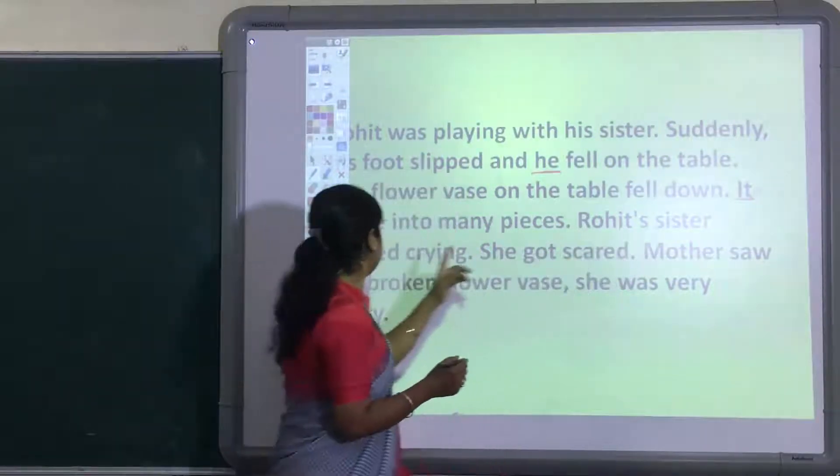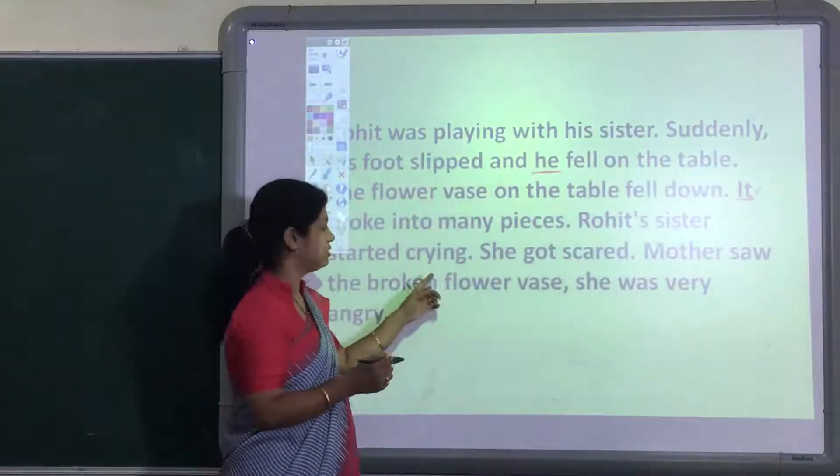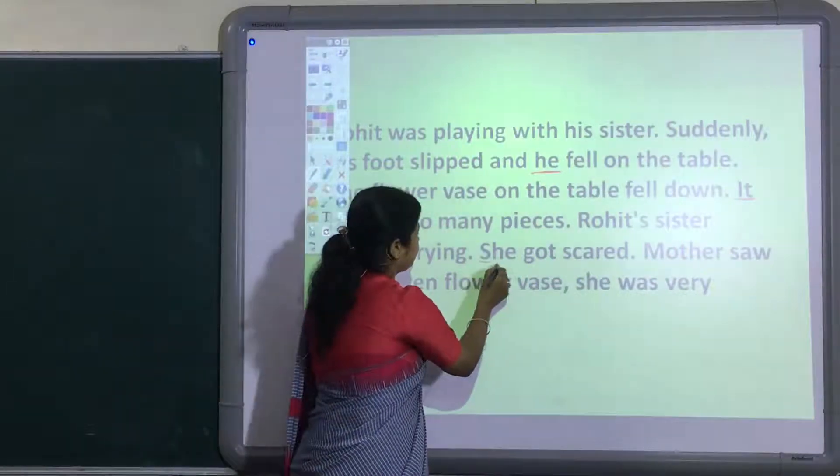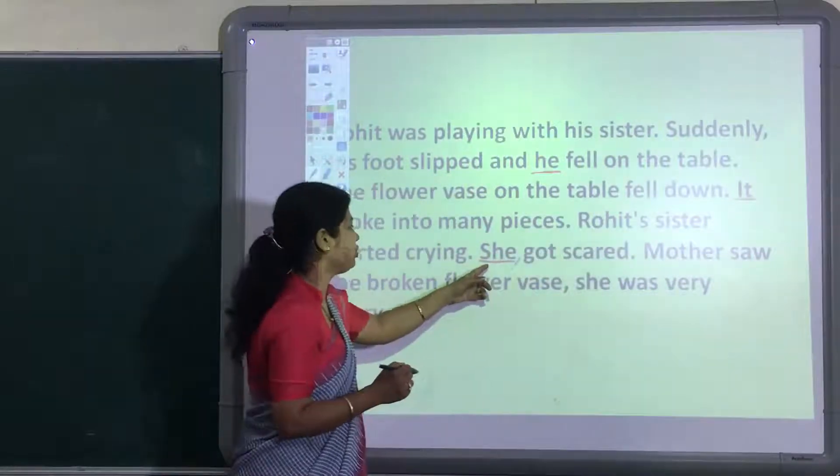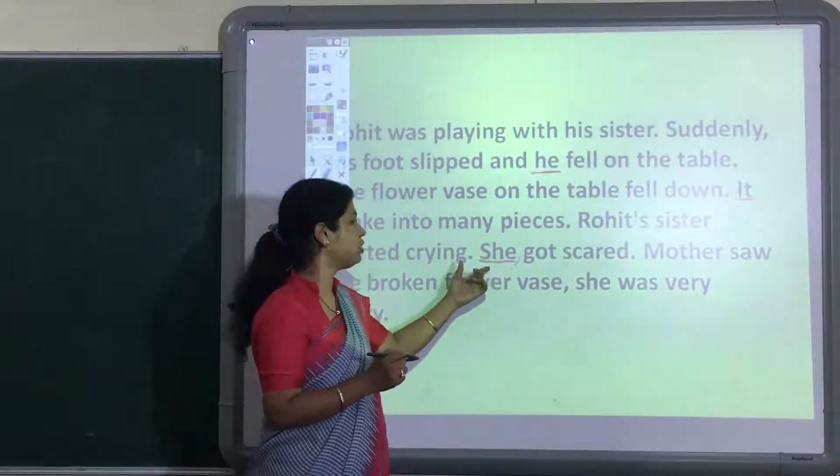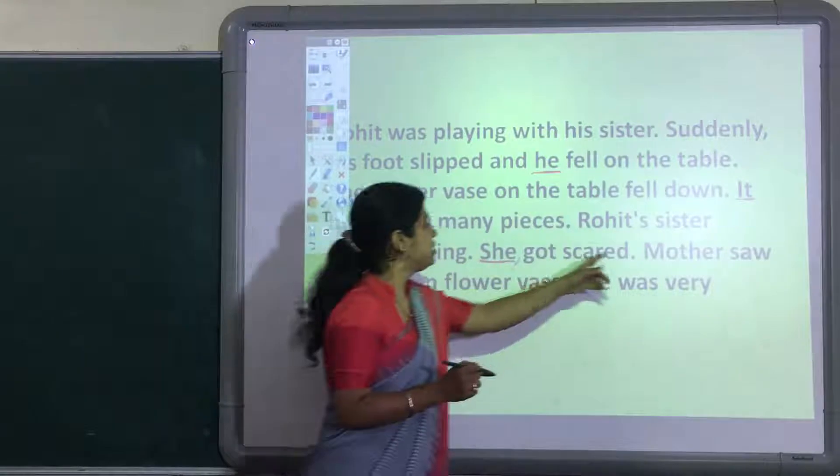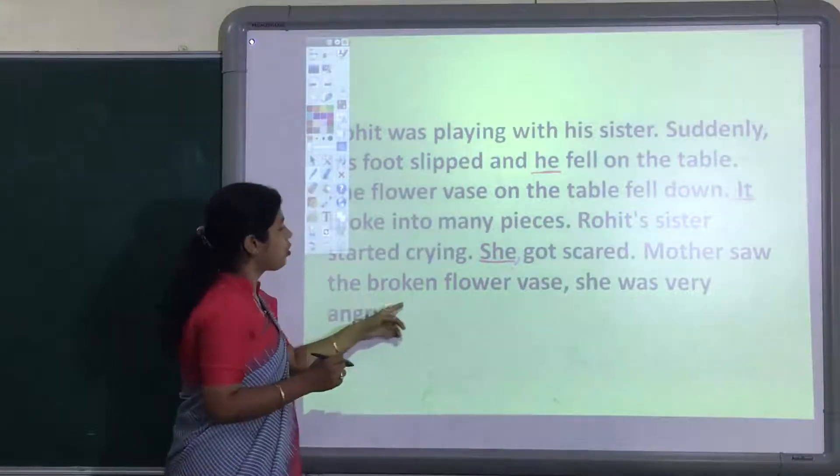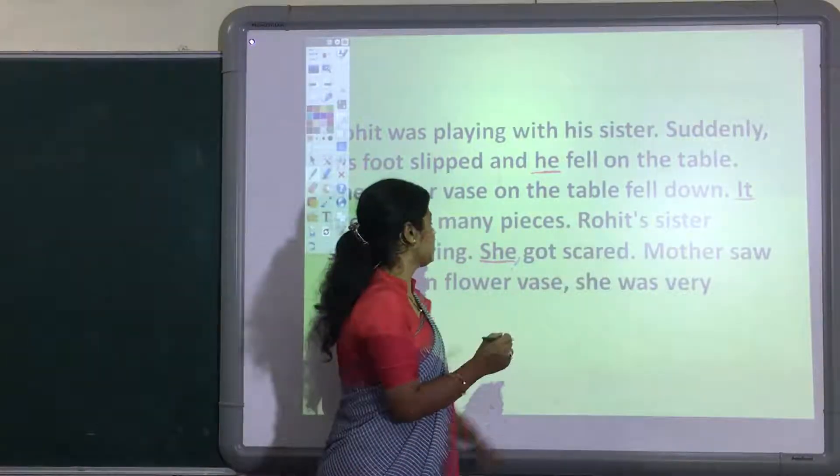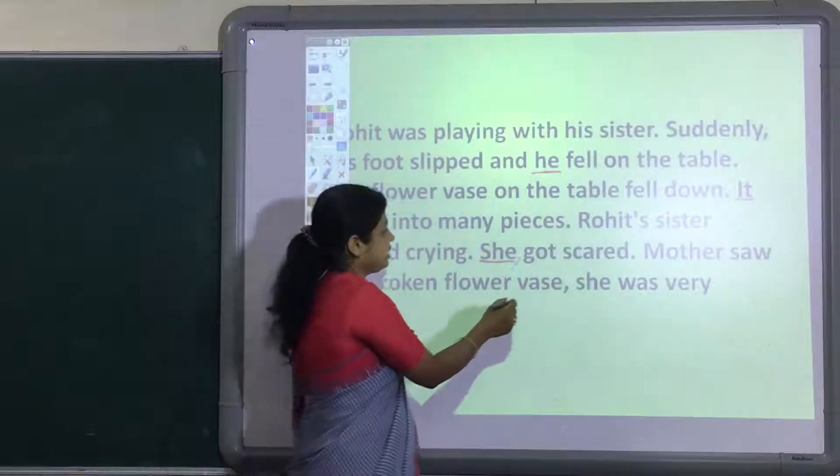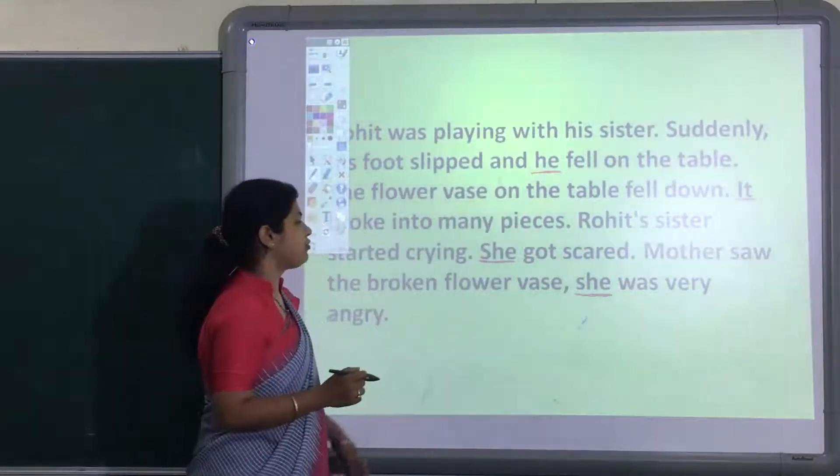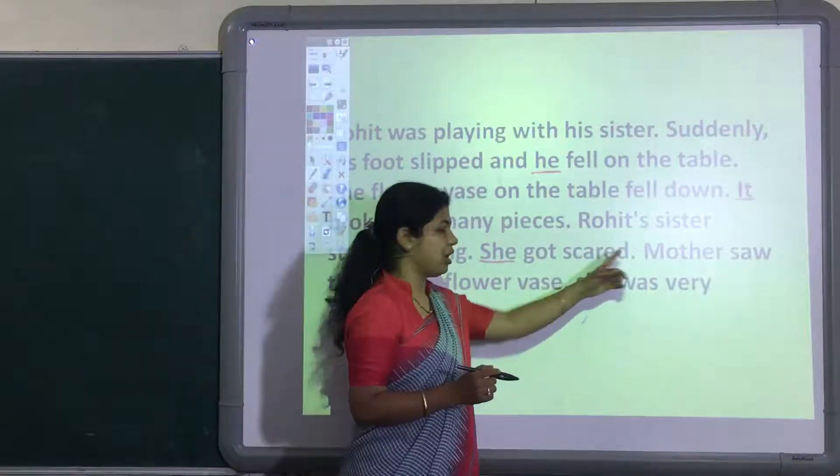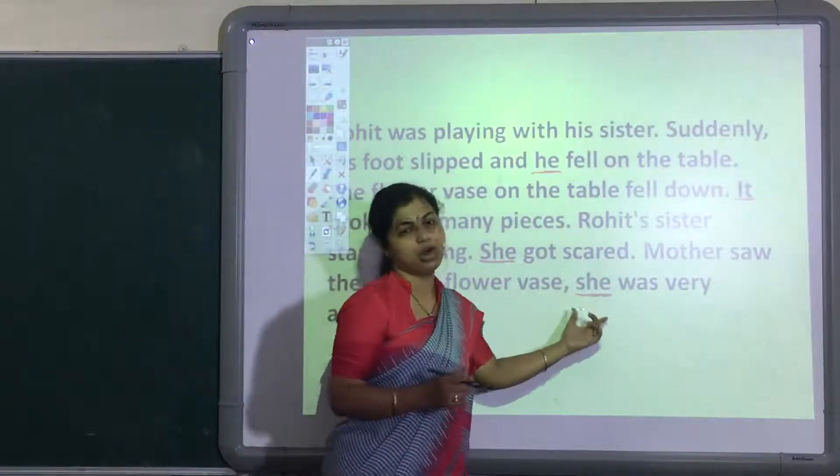Rohit's sister started crying. She got scared. Now here again, for Rohit's sister, we have used 'she' pronoun to avoid the repetition. Mother saw the broken flower vase. She was very angry. Again, here 'she' pronoun came. Instead of using mother noun, we have used 'she' pronoun for mother.